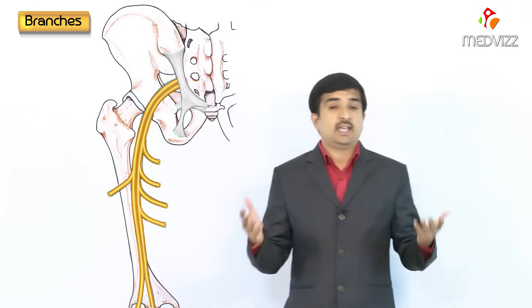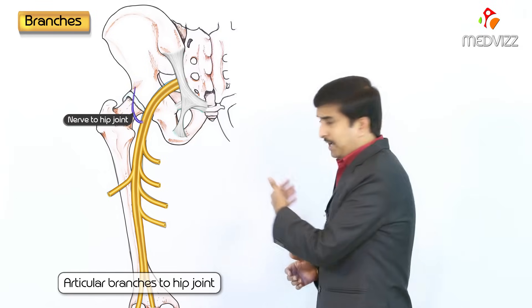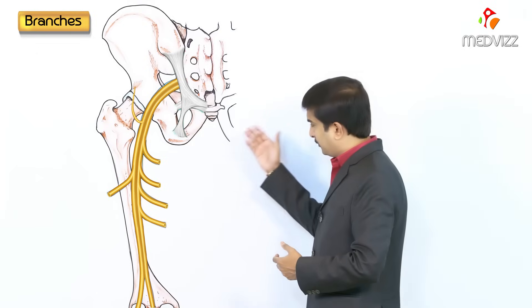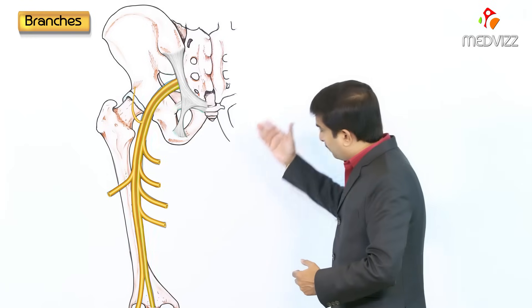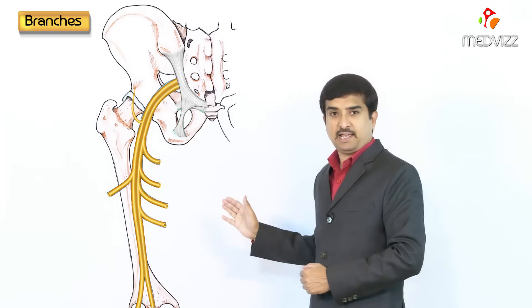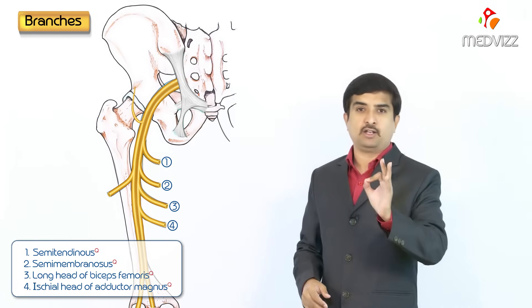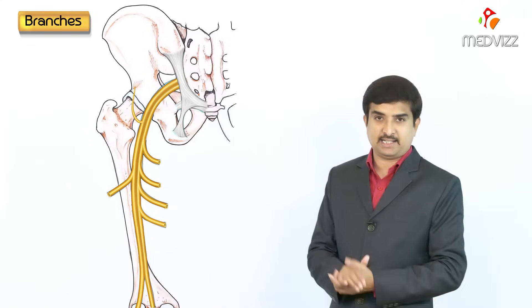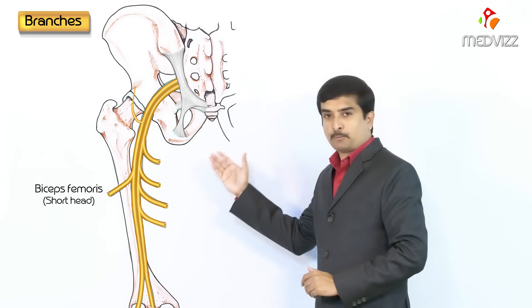The branches of the sciatic nerve include an articular branch, mainly given to the hip joint, and muscular branches. The muscular branches are discussed in two parts. The tibial component, which is the medial component, supplies the semitendinosus, semimembranosus, long head of the biceps femoris, and the ischial head of the adductor magnus. The common peroneal component, which is the lateral component of the sciatic nerve, supplies only the short head of the biceps femoris.